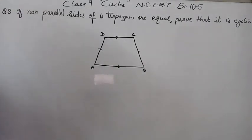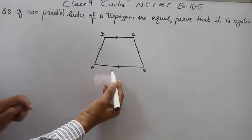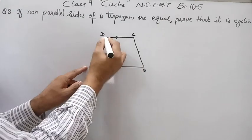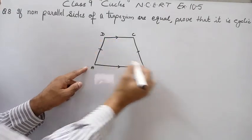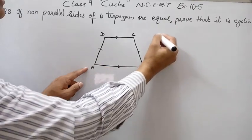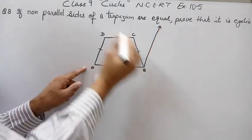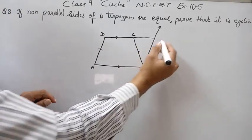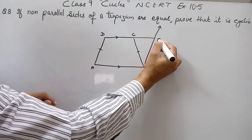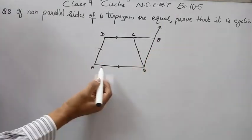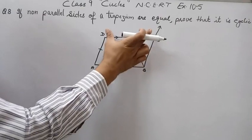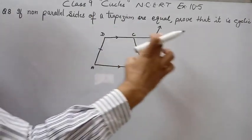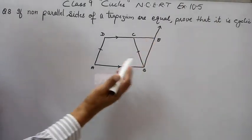We need to do one construction here. We will draw a line parallel to AD through point B. From point B we draw BE parallel to AD, and then extend CD so that it cuts this line at point E. Now, AB is parallel to DE because this is a trapezium, and AD is parallel to BE by construction.